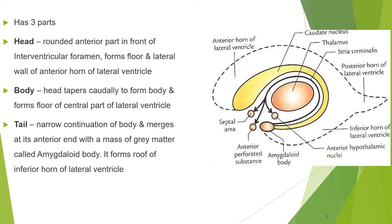The caudate nucleus consists of three parts: head, body, and tail. The head is the rounded anterior part in front of the interventricular foramen, forming the floor and lateral wall of the anterior horn of the lateral ventricle. The head tapers caudally to form the body, which forms the floor of the central part of the lateral ventricle. The body further narrows and merges at its anterior end with the amygdaloid body. The tail forms the roof of the inferior horn of the lateral ventricle.